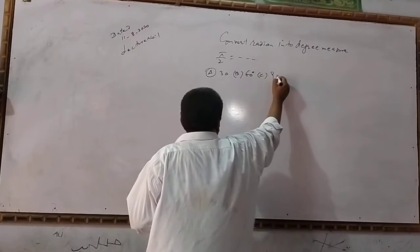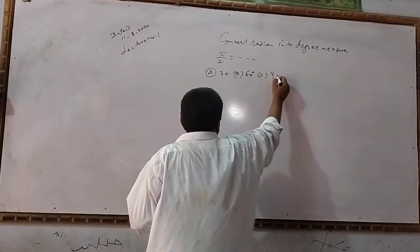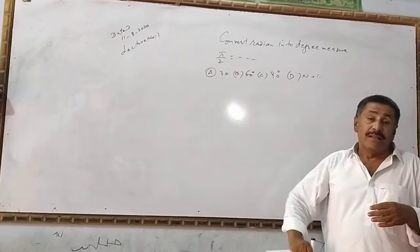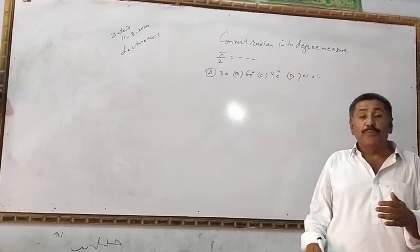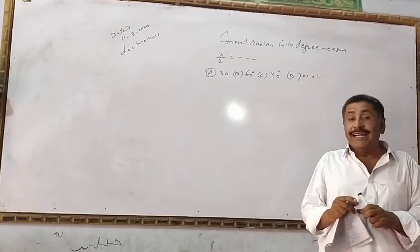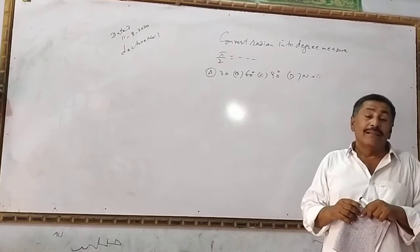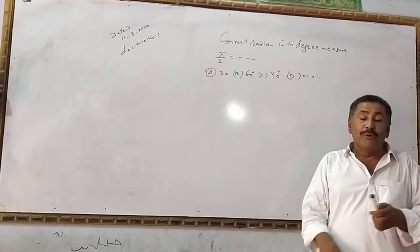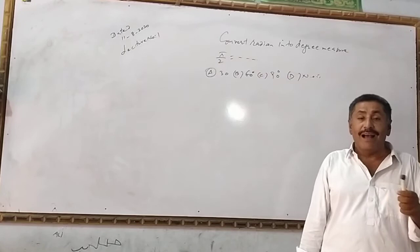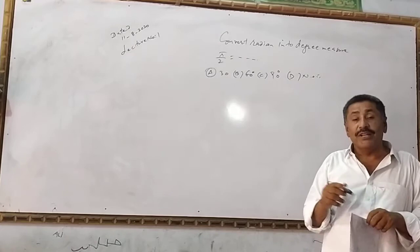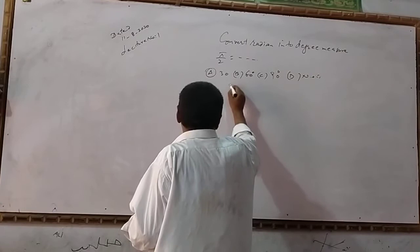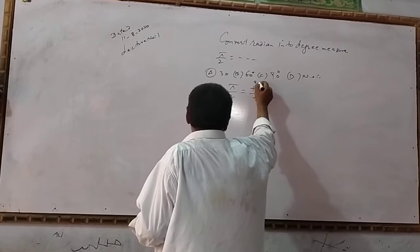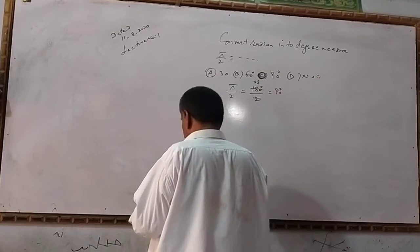For the options: A) 30, B) 60, C) 90, D) 90. π/2 equals 180 divided by 2, which equals 90 degrees.